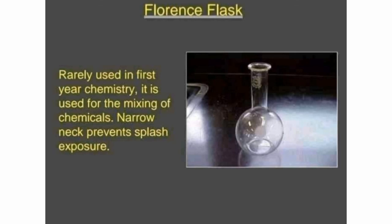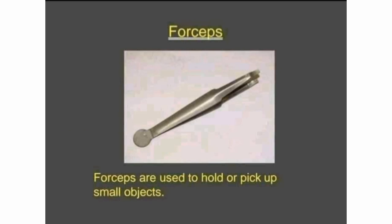Next is the Florence flask. It is round at the bottom and narrow at the top. It is rarely used in first-year chemistry, as it is used for mixing chemicals, and its narrow neck prevents flash exposure. We also have forceps, which are used to hold or pick up small objects.